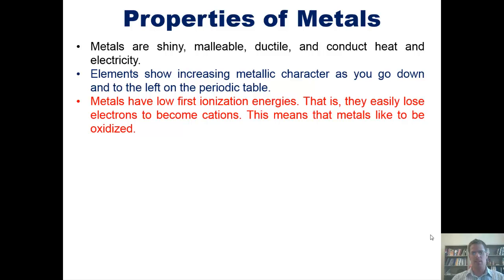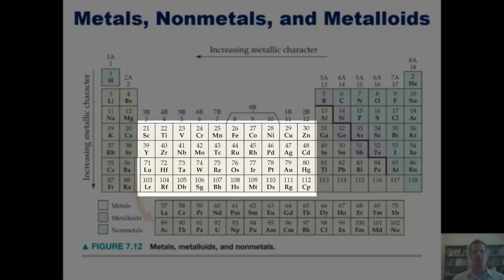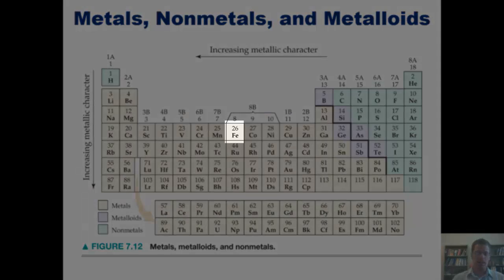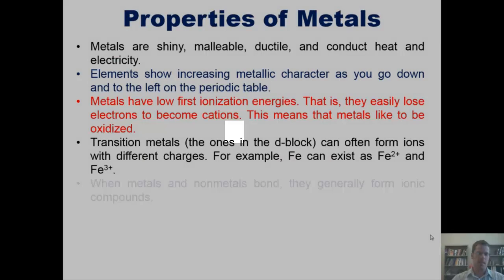Metals have low first ionization energies. That is, they easily lose electrons to become positively charged cations. This means that metals like to be oxidized. They like to lose electrons. Transition metals, the ones in the D block, can often form ions with differing charges. For example, iron can exist as iron 2+ or iron 3+. When metals and nonmetals bond, they generally form ionic compounds.